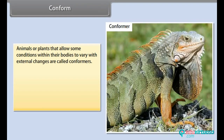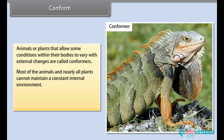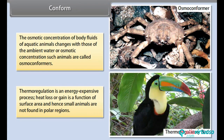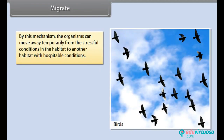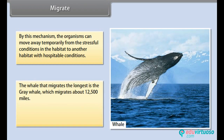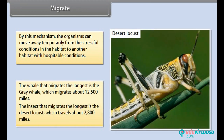Conform: Animals and plants that allow some conditions within their bodies to vary with external changes are called conformers. Most animals and nearly all plants cannot maintain a constant internal environment; their body temperature changes with the ambient temperature. Such animals are called osmoconformers. Thermoregulation is an energy-expensive process; heat loss or gain is a function of surface area, and hence small animals are not found in polar regions. Migrate: By this mechanism organisms can move away temporarily from the stressful conditions in the habitat to another habitat with hospitable conditions. The grey whale migrates the longest, about 12,500 miles. The desert locust is the insect that migrates the longest, traveling about 2,800 miles.